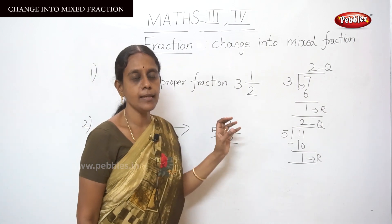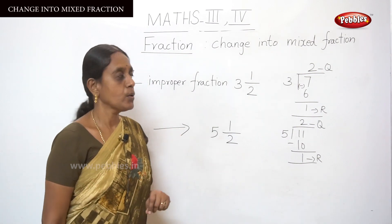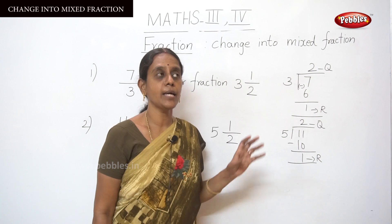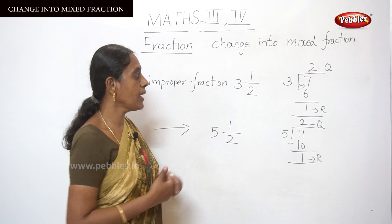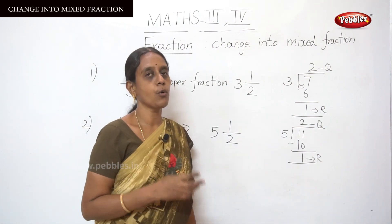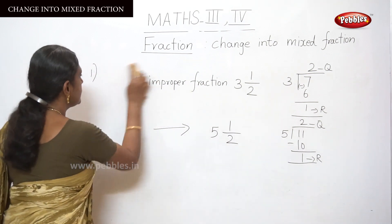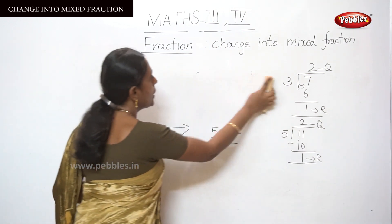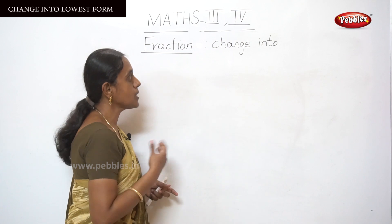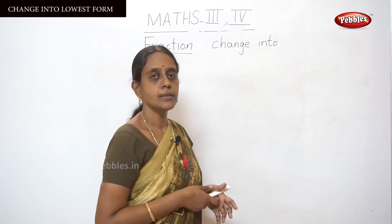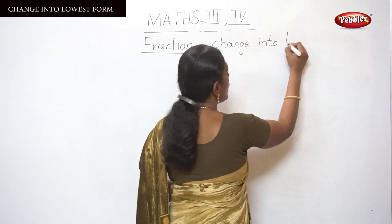Next we move on to the next heading — find the lowest form of a fraction. This is a simple way to know by doing multiplication tables. We cancel numbers and make the answer the lowest form of the fraction. So today we are learning how to change to improper, change to mixed, and change to lowest form.